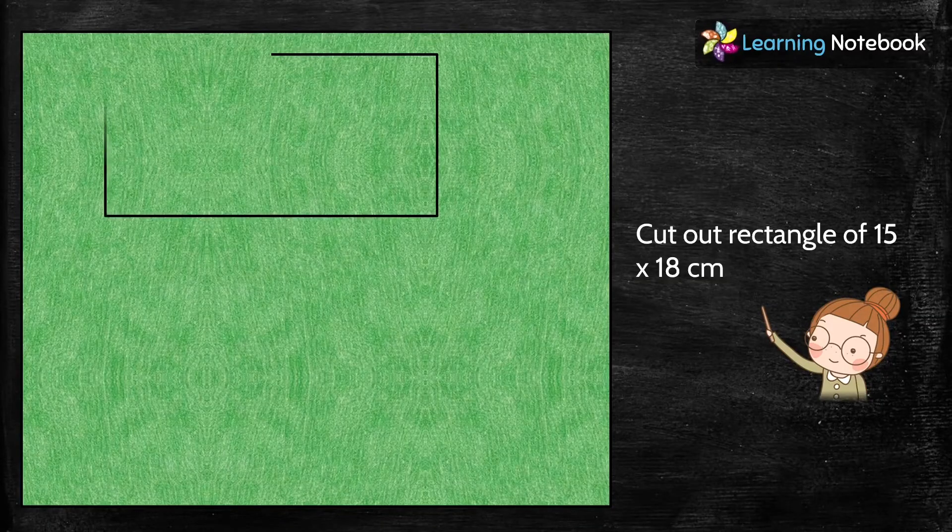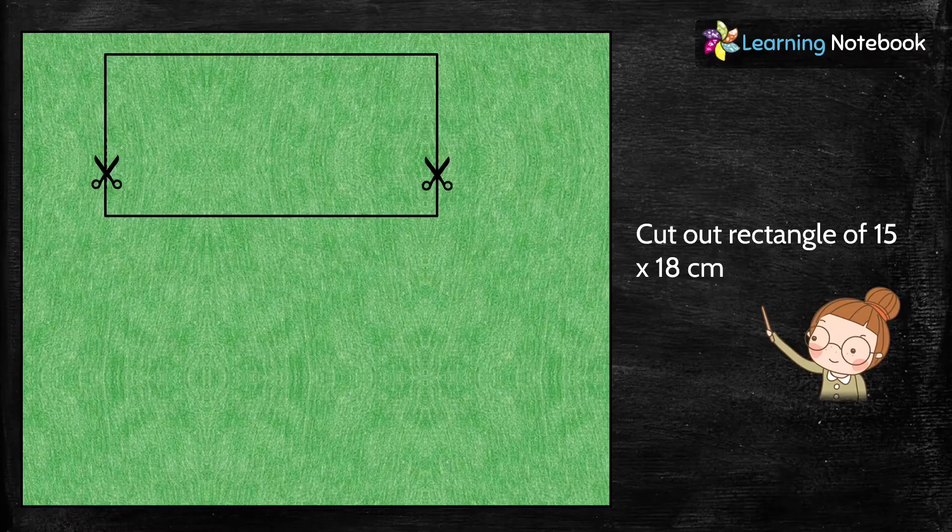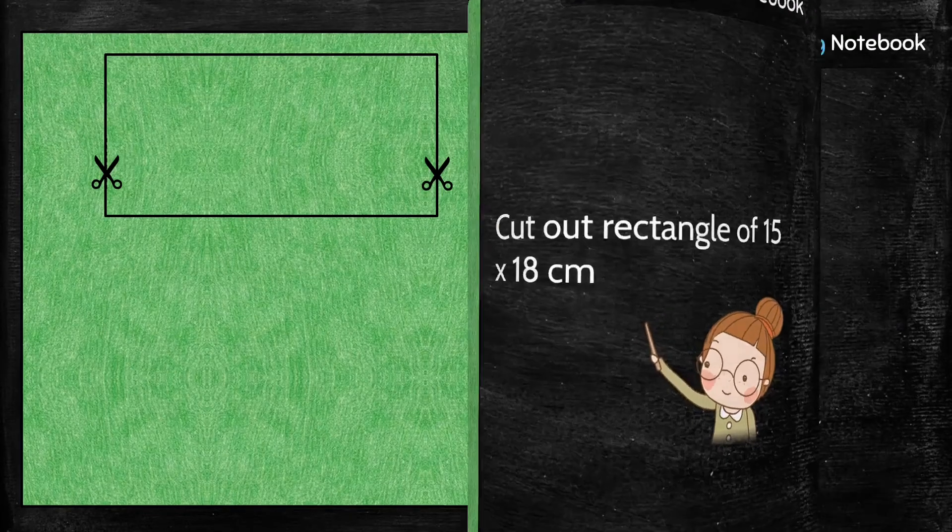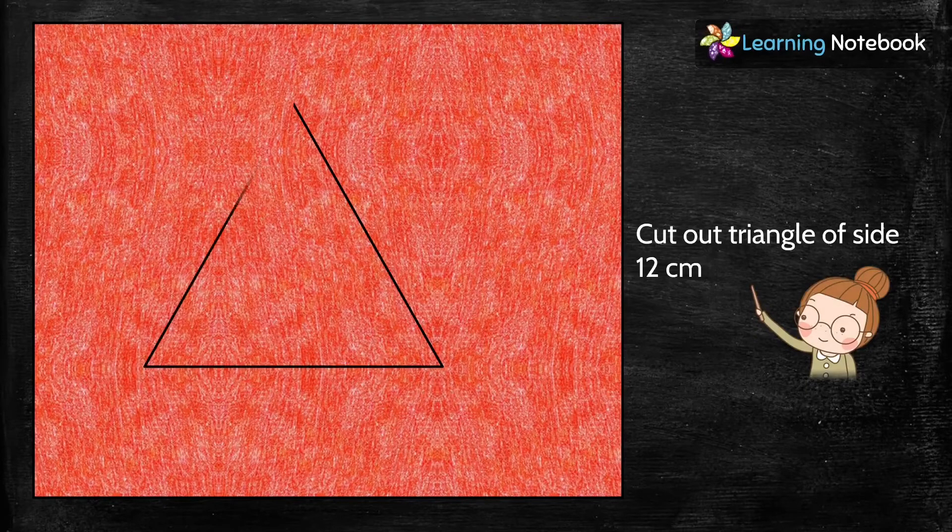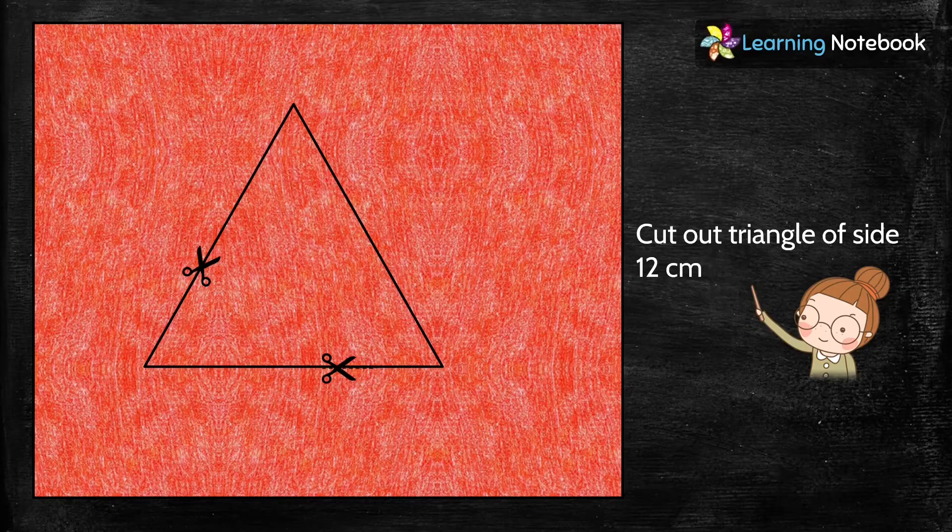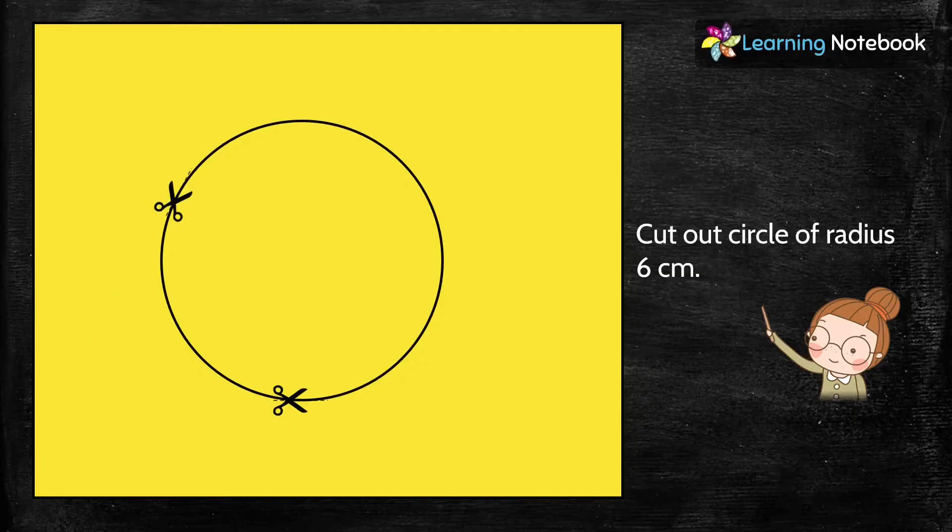After this, take a green colored sheet and cut out a rectangle of 15 centimeter into 18 centimeter as shown here. And cut out a triangle of side 12 centimeter from it. Then cut out a circle of radius 6 centimeter from a yellow colored sheet.